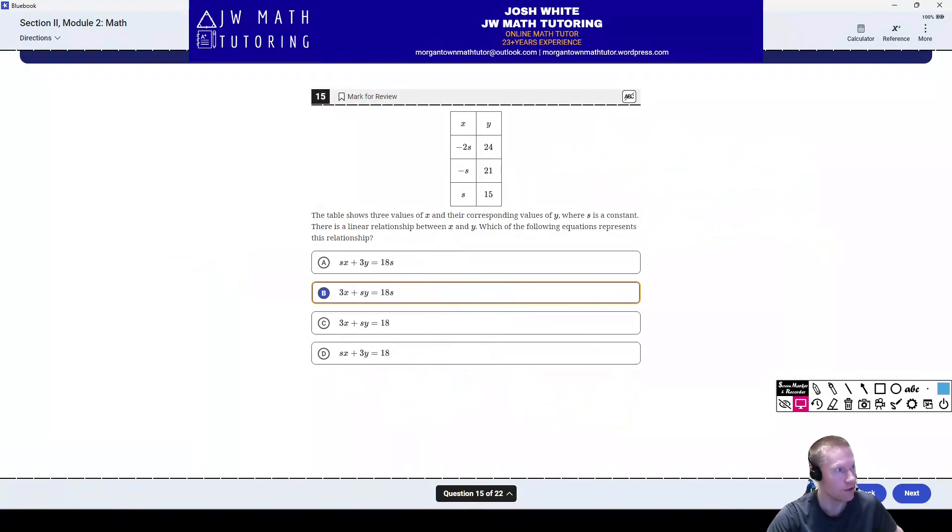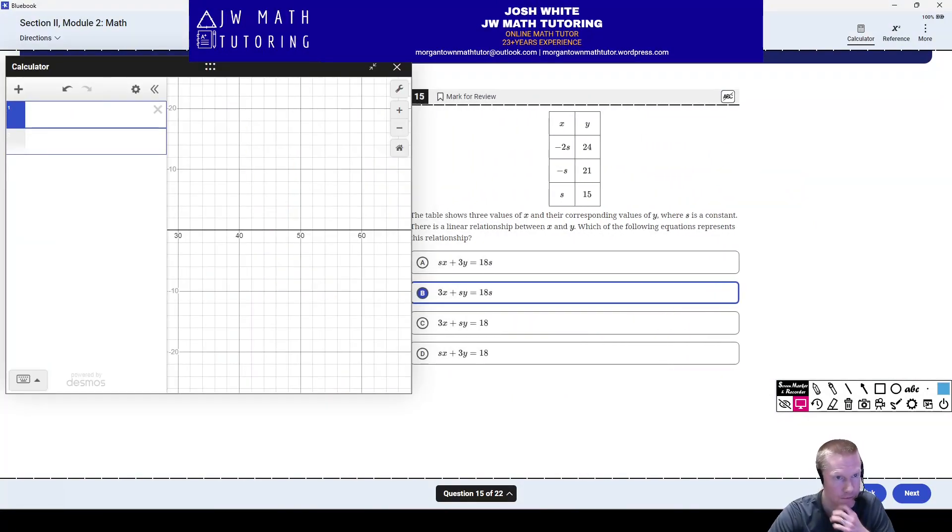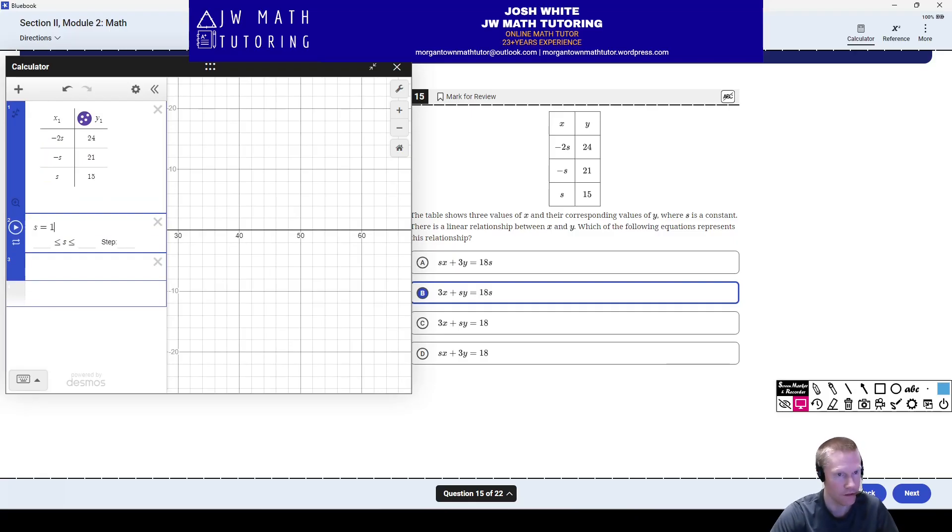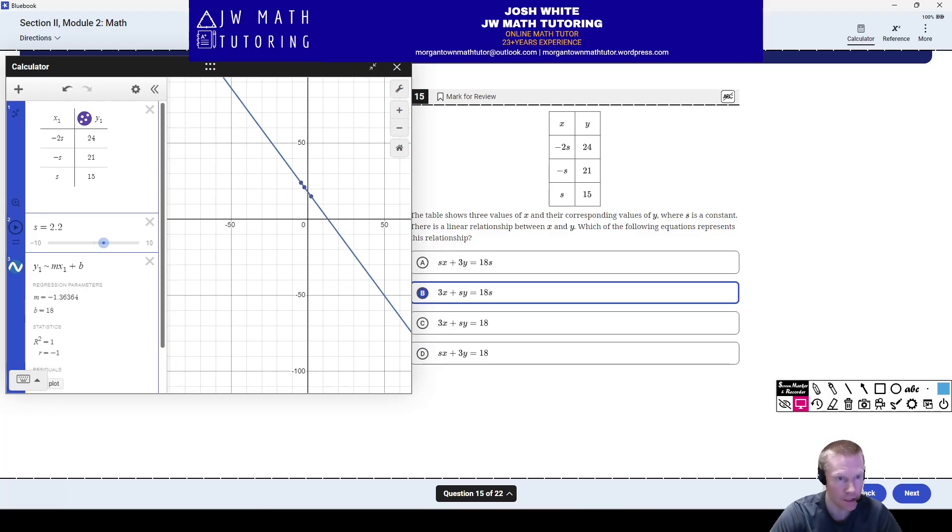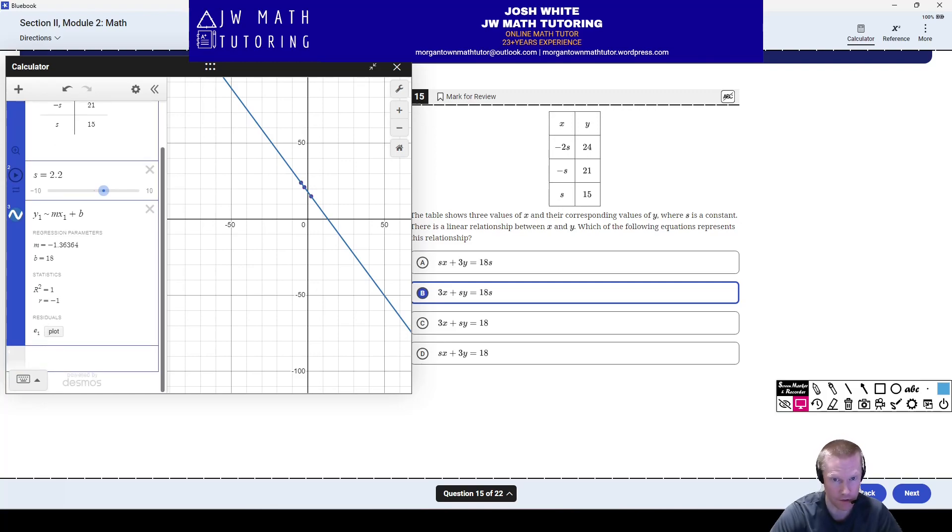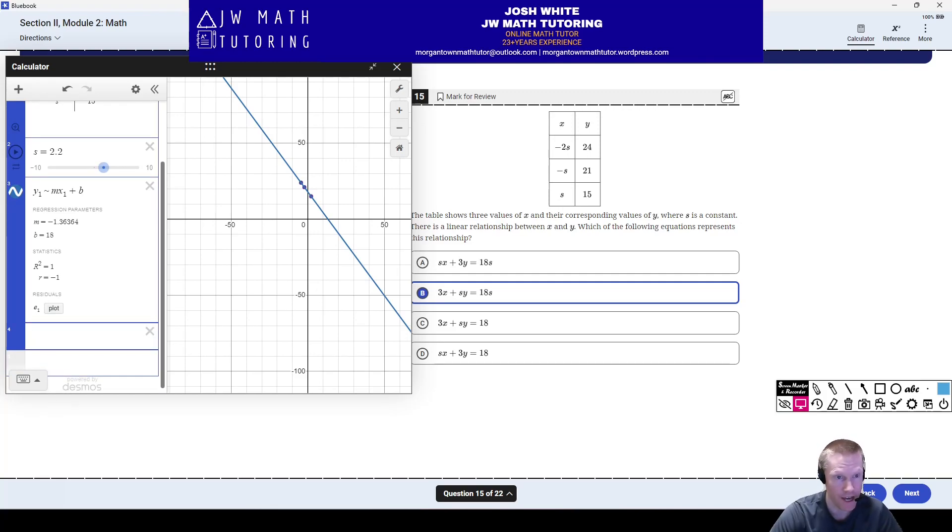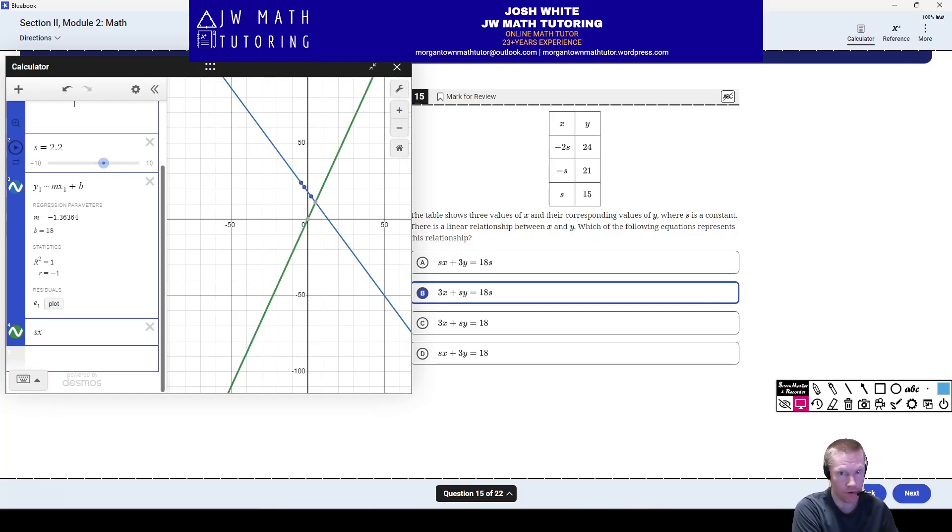What you could also do is go to Desmos. We're going to put in this table of values. I'm going to add a slider for s. I'm going to just move it here, whatever. Now I am going to do a linear regression. The reason I do this is I just need to get the graph of the line that matches all, matches this table. What I will do next is I will graph the various answer choices and I will see which one overlaps entirely the graph I have from the linear regression.